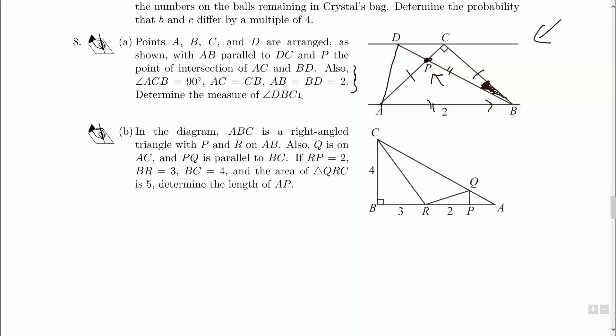What have we got to do here in B? In the diagram, ABC is a right angled triangle with P and R on AB. Also Q is on AC, and PQ is parallel to BC. Well, if we've got a right angle here, then surely we have right angles here as well. If RP is two, BR is three, and BC is four, I see a three-four-five triangle. Not sure if that's going to help, but there we go. And the area of QRC is five. Nifty. Determine the length of AP. So we want this length here. I might give it a name X.